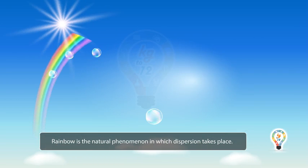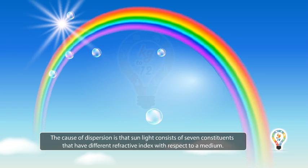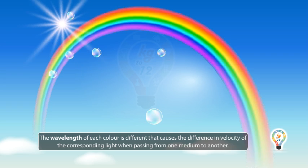Rainbow is the natural phenomenon in which dispersion takes place. The cause of dispersion is that sunlight consists of seven constituents that have different refractive index with respect to a medium. The wavelength of each color is different that causes a difference in velocity of the corresponding light when passing from one medium to another.